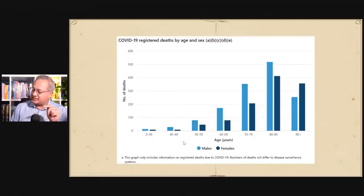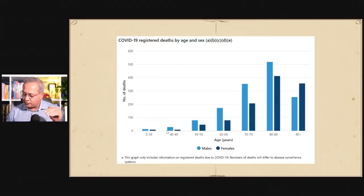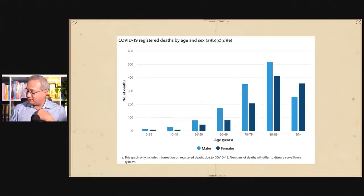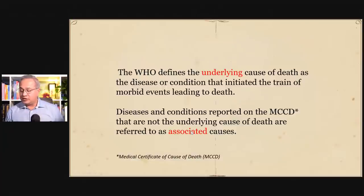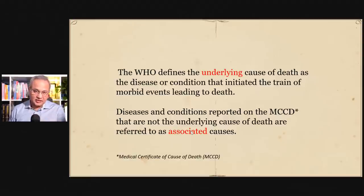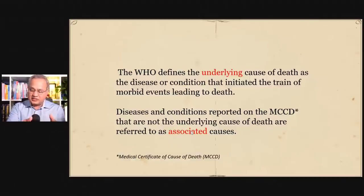Registered deaths by age and sex — very interesting. Ages 0 to 39 had really low deaths, even 40 to 49. From 50 onwards — my age bracket, happy birthday to Mubeen — the death rate slowly starts climbing up in both men and women. The WHO defines the underlying cause of death as the disease or condition that initiated the train of morbid events leading to death — so they really neatly separate death caused by COVID from death where COVID was merely present.